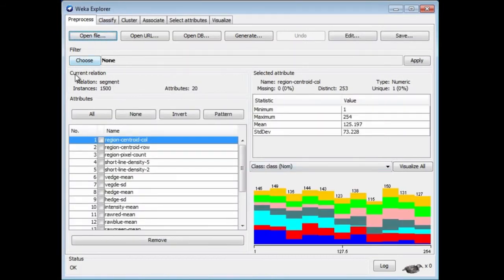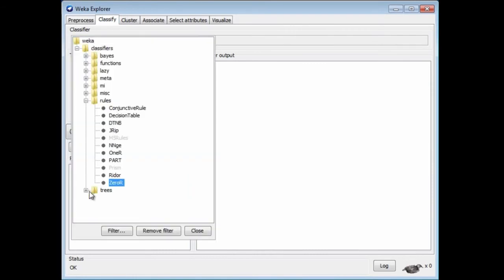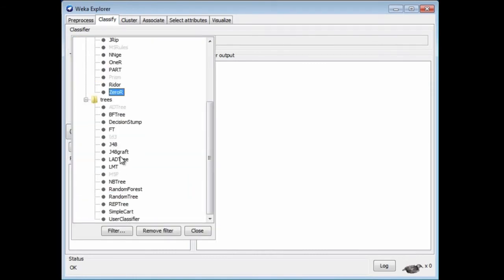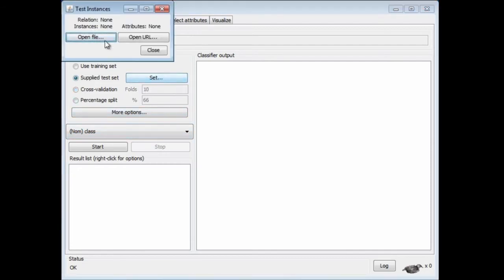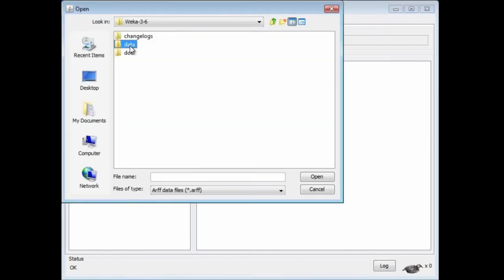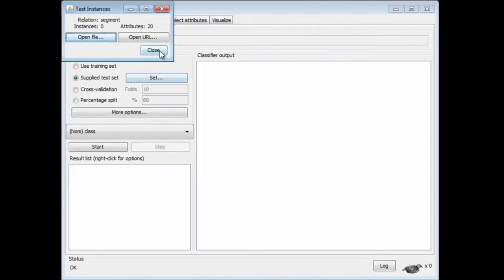I'm going to use a supplied test set. First of all, I'm going to use J48. There's the J48 tree learner. I'm going to use a supplied test set. I will set it to the appropriate segment test file, segment-test.arff. I'm going to open that. Now we've got a test set.